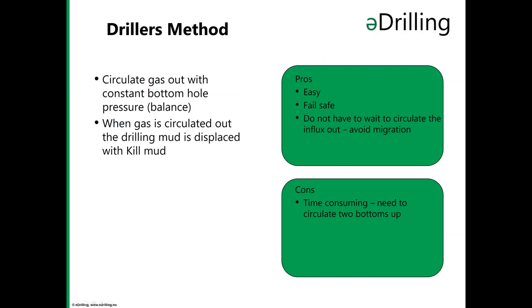Now we will briefly discuss some of the different kill methods. Starting with the driller's method — you circulate out the gas at constant bottom hole pressure to avoid more gas getting in, then displace the drilling mud with kill mud. The pros are that it's easy, rather fail-safe, and you don't need to wait before circulating the influx out, which helps avoid gas migration in the wellbore. The con is that it's time consuming, requiring two circulation cycles — one to get rid of the gas and one to displace to the heavier fluid to keep the well in balance.